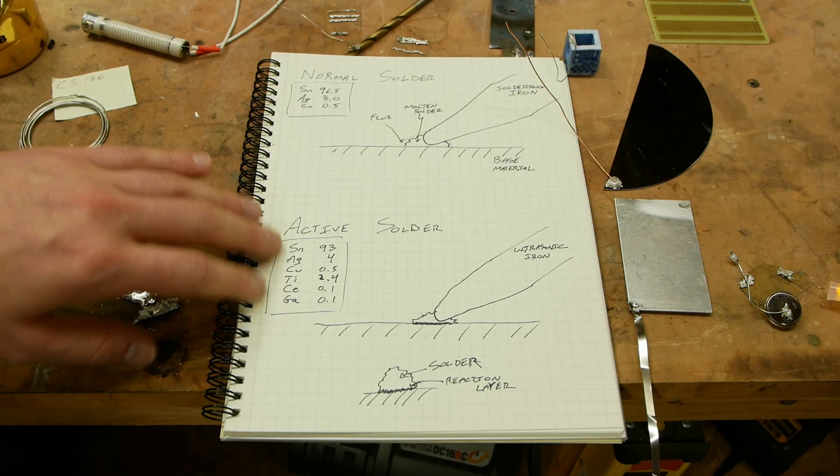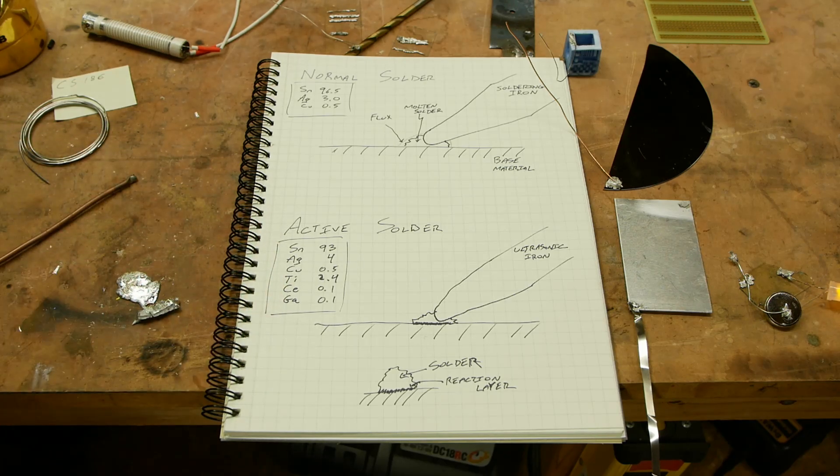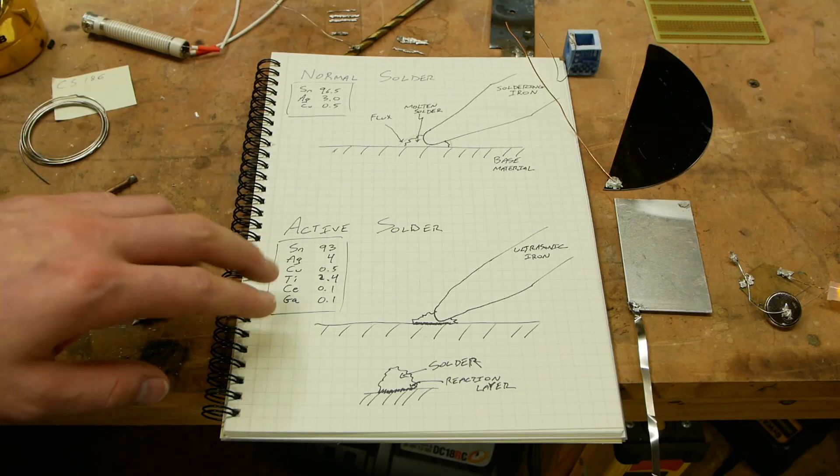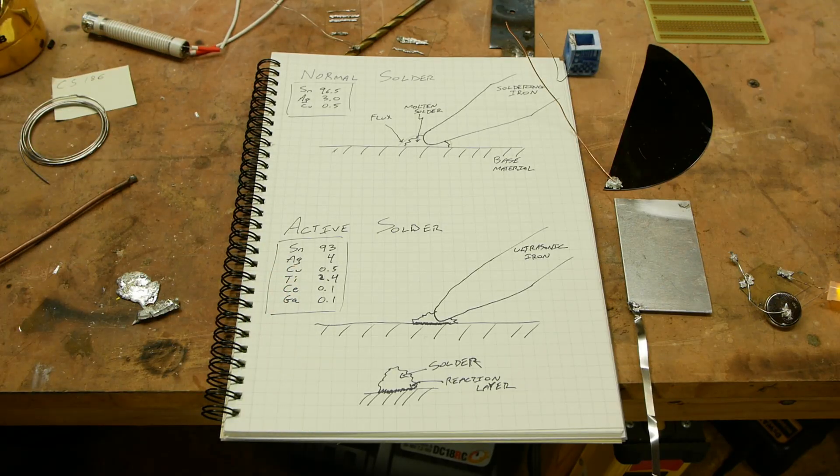So the reason that you go through the trouble of having all this chemistry is to get the melting point you want, the strength of the solder you want, the aggressiveness in sort of bonding to the surface and the ability to bond to metals as well as non-metals.